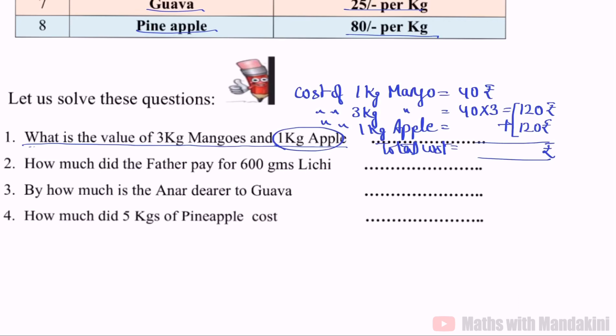Question 2: How much did the father pay for 600 grams litchi? It's 600 grams of litchi. So first we need to see, 1 kg litchi costs how much? Cost of 1 kg litchi is 70 rupees. Since it's asked in grams, we will convert 1 kg into grams. Cost of 1000 grams, because 1 kg is equal to 1000 grams, so 1000 grams litchi is 70 rupees.